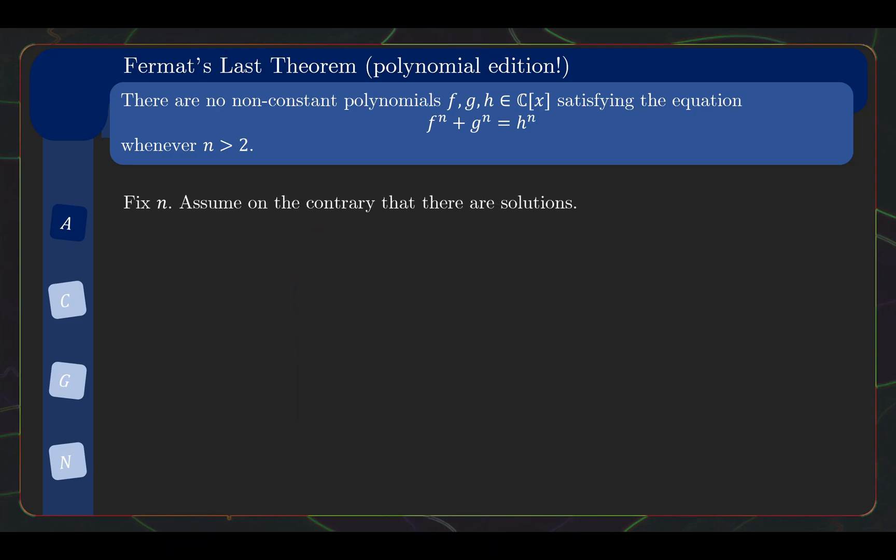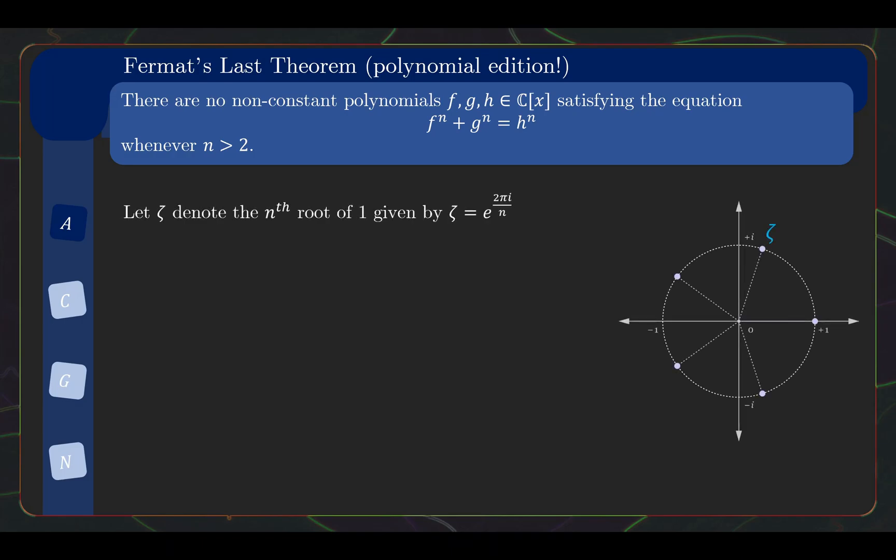To prove this theorem, assume on the contrary that there are solutions, and note that we can assume f, g, and h to be relatively prime because we can always divide out any common factors. Let's also choose to examine the solution where the sum of degrees of f and g is minimal. Now here comes the substantial part. We let ζ denote the nth root of unity as shown. This will be a key tool in our proof.